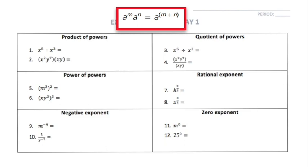Using our first rule — the product of powers rule — we remember it applies to multiplication of variables. We can only use this rule when we have the same base. In this case, I have an x here and an x here, so they are the same base and I can use my rule.